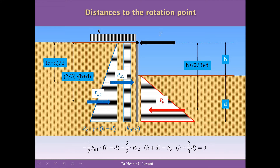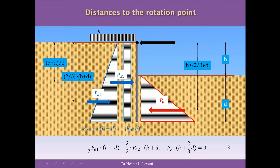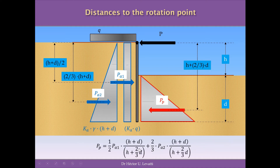After that, the summation of moments is equal to: a negative moment because Pa1 multiplied by the distance, which is half of H plus D — negative because it is anti-clockwise, producing a negative rotation around the point on top of the wall — minus two-thirds of the distance of Pa2, which is the moment of the resultant active pressure from the self-weight of the ground to the left. Plus, the passive pressure produces a positive moment: Pp multiplied by the distance from the force to point A. All of this has to be equal to zero to fulfill moment equilibrium. This gives us the formula for the passive pressure in equilibrium as a function of the distances and the active pressures to the left of the wall.